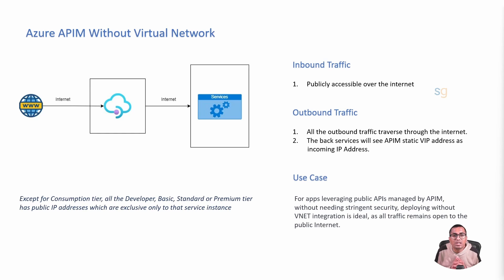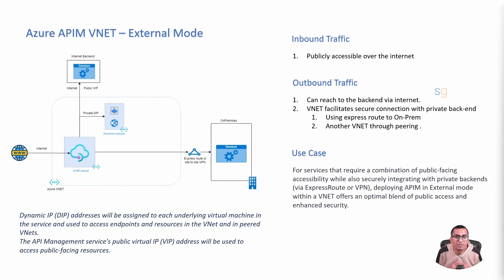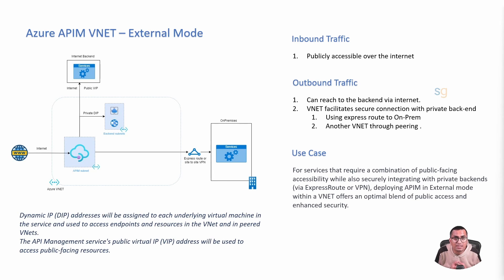Now let's look at how we can control inbound and outbound traffic with VNet configurations — deploying Azure API Management within a virtual network in external mode. When you deploy Azure API Management in a virtual network in external mode, you get a balance between accessibility and security. Your API Management service gets a dedicated static IP address from the virtual network but is also exposed to the public internet. Even though it is part of a VNet, it is still accessible from the public internet; however, you have the ability to apply network security groups or firewalls for more granular control over who can access your APIs.